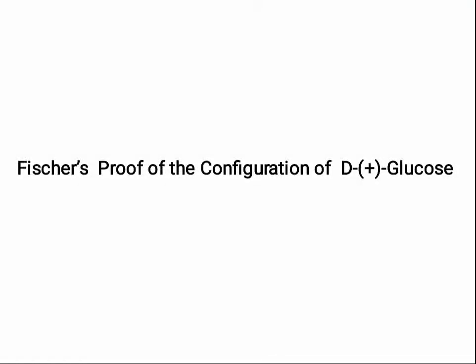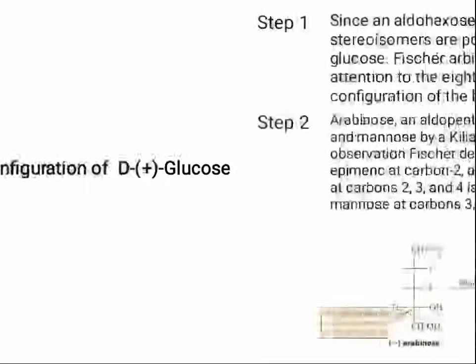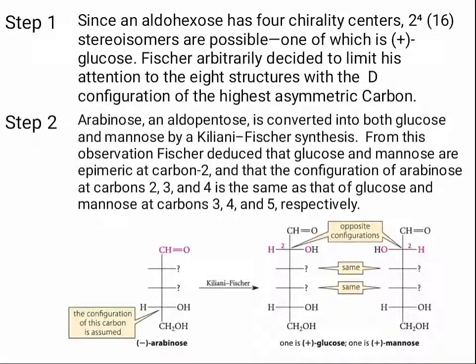Fischer's proof of the configuration of D-glucose. Step 1: since an aldo hexose has four chirality centers in total, that means 16 stereoisomers are possible, one of which is glucose. Fischer arbitrarily decided to limit his attention to the eight structures with the D-configuration of the highest asymmetric carbon. He arbitrarily chose that this highest asymmetric carbon has the D-configuration.